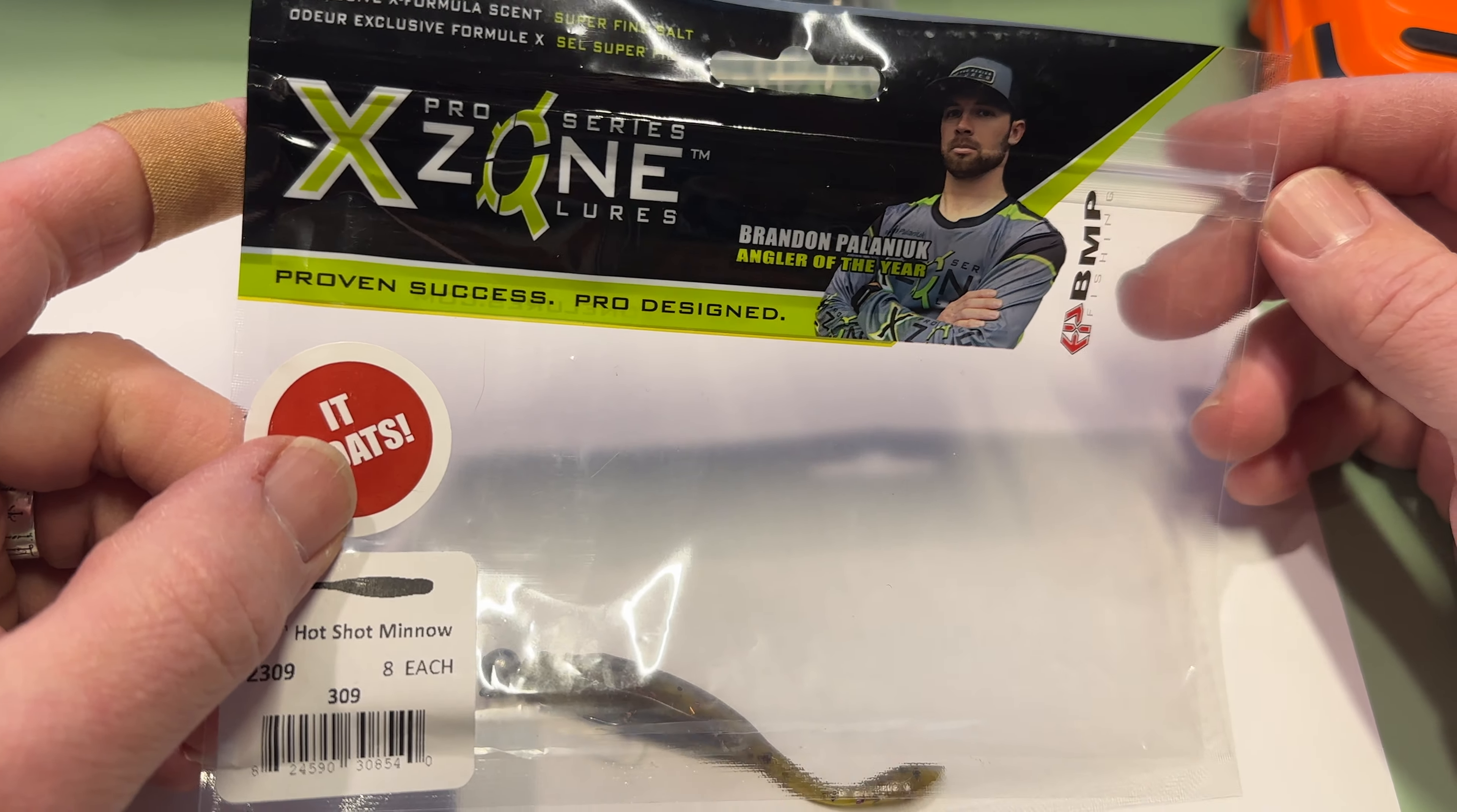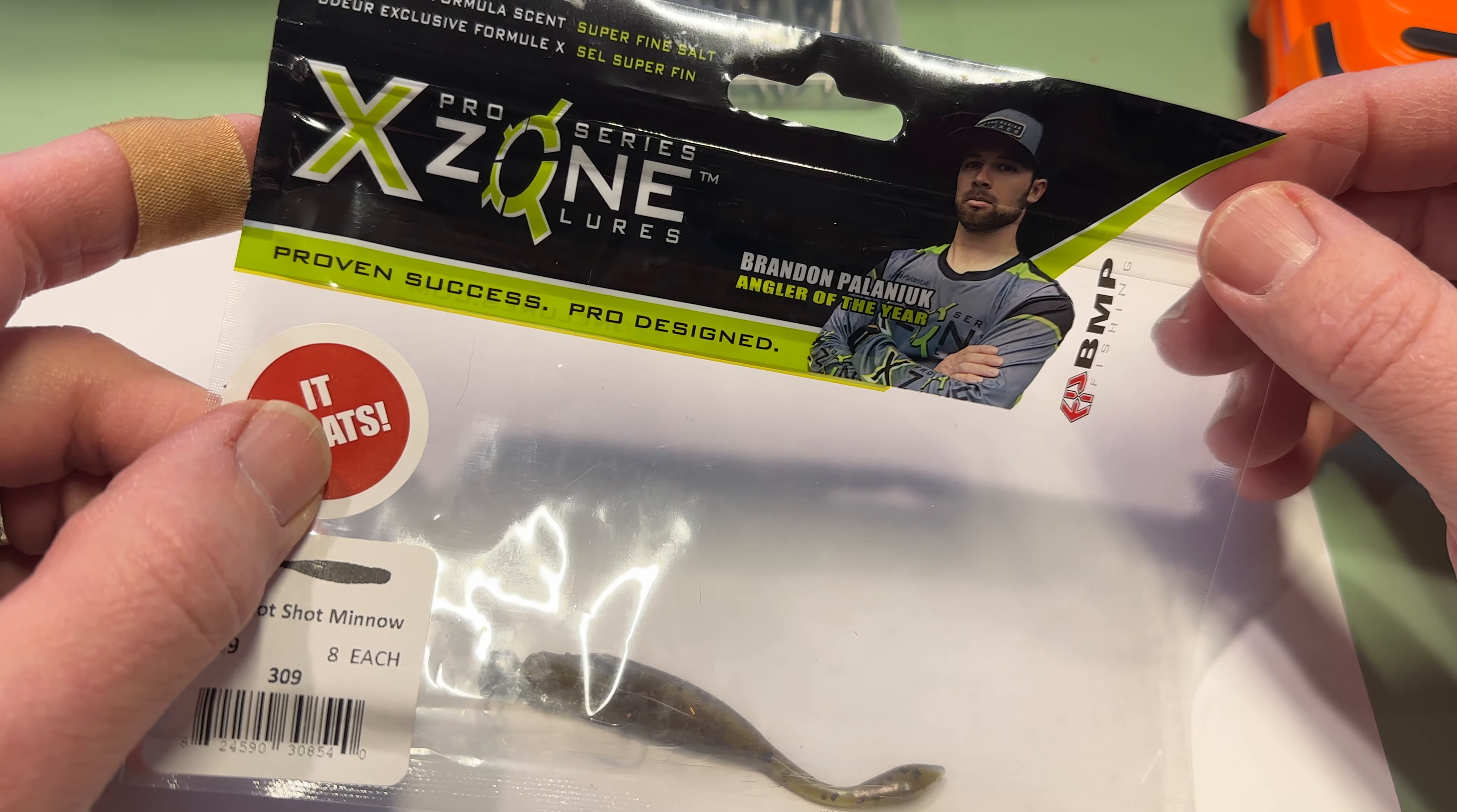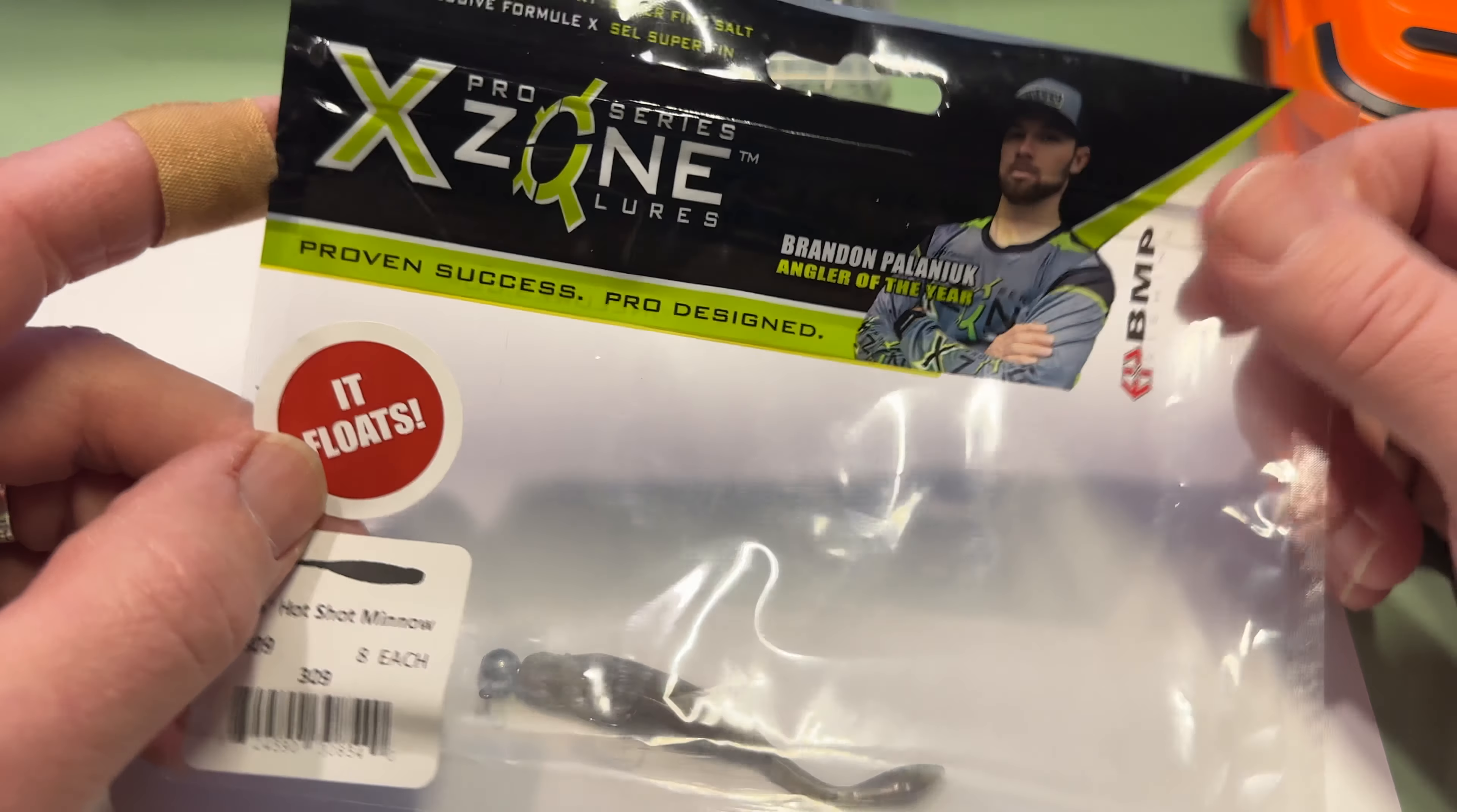I was out yesterday and I hooked into ten trout and I landed nine. And one of them was a tiger trout and the rest were brook trout. I think there may have been one rainbow in there too. Yeah, one tiger trout and eight rainbow trout.